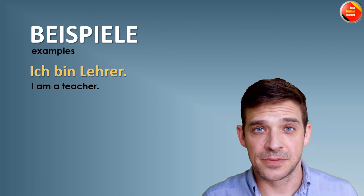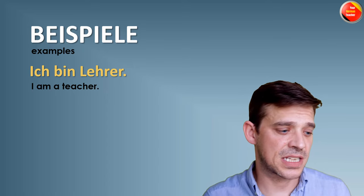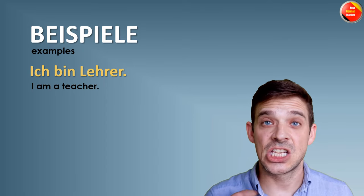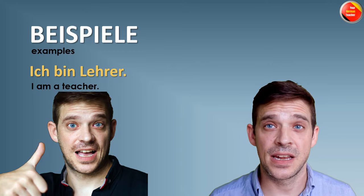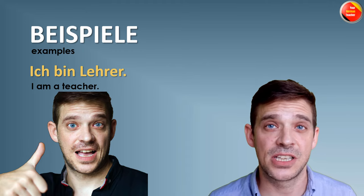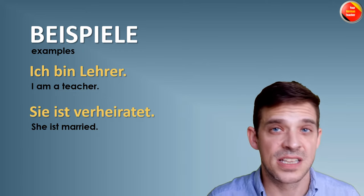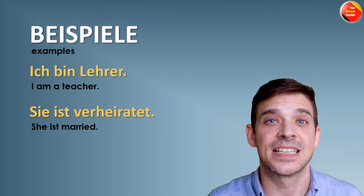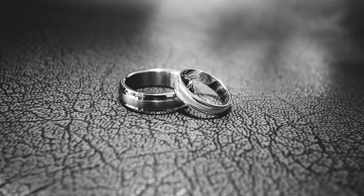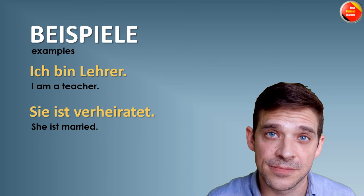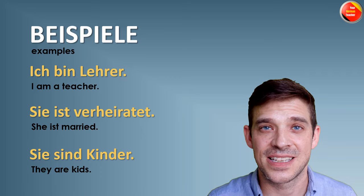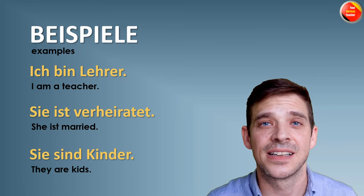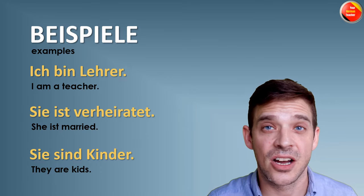Examples — Beispiele: Ich bin Lehrer — I'm a teacher. Sie ist verheiratet — she is married. Sie sind Kinder — they are kids.